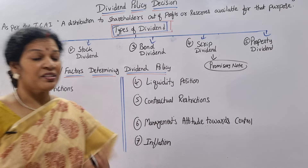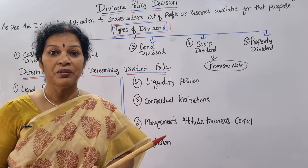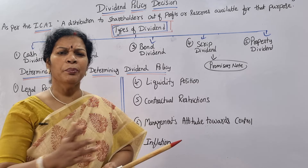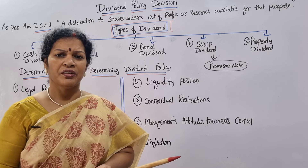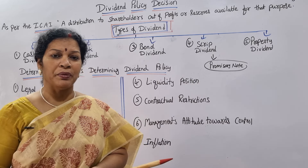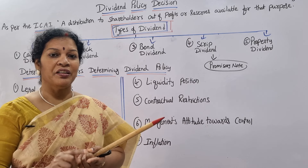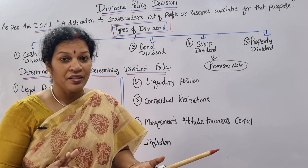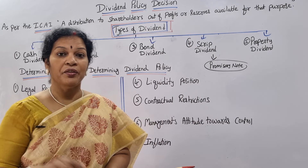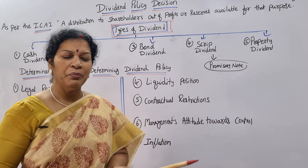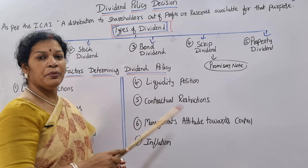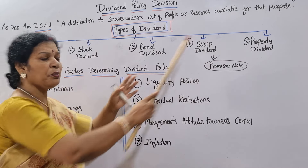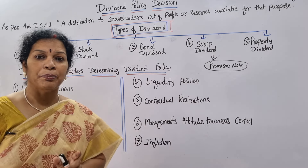The fourth factor is liquidity position. Sometimes a company may be very large, even multinational, and getting lots of profits — but liquidity position is required to actually pay out dividend. If liquidity position is good, the company can pay dividend directly. Otherwise, they can follow alternative methods like script dividend, bond dividend, property dividend, or stock dividend.